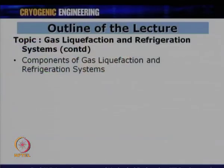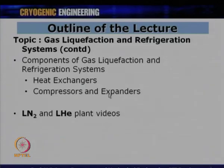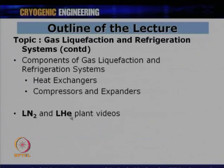In today's lecture, I will discuss different components in a gas liquefaction and refrigeration cycle — heat exchangers, compressors, and expanders. I will also show videos of how a liquid nitrogen or liquid helium plant works — how one reaches 77 Kelvin to liquefy nitrogen and 4.2 Kelvin to get liquid helium. Because we cannot take you to the plants, I have obtained some videos from these plants.